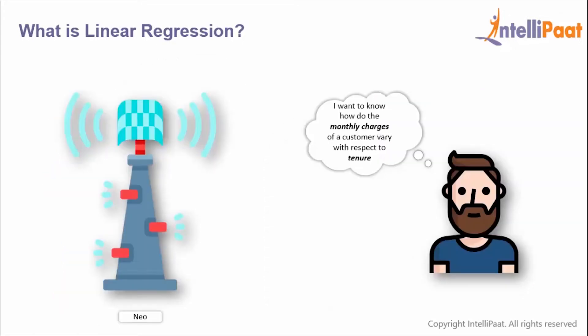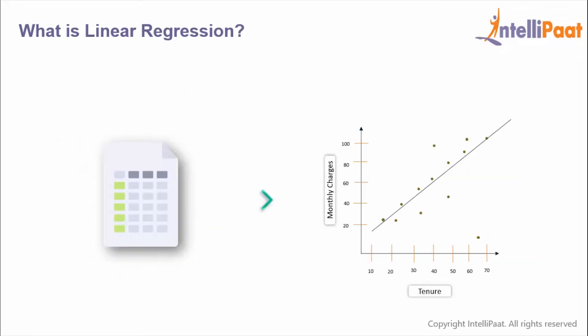So let's have a better understanding of linear regression with this example. Let's say there's a telecom network called Neo, and the delivery manager of the company wants to find out if there's a relationship between the monthly charges of the customer and the tenure of the customer.